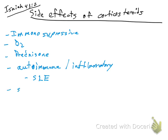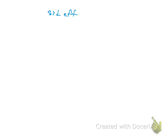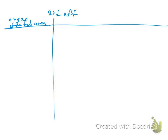Corticosteroids can cause several side effects. To review those side effects, we are going to create a table here. On one side we will list the organ or affected area, and on the other side we will list the consequence or side effect.